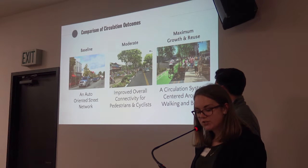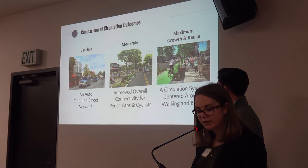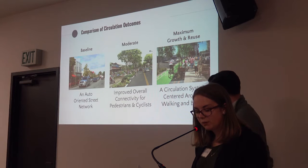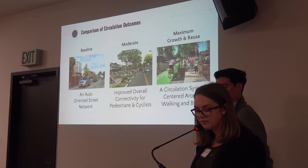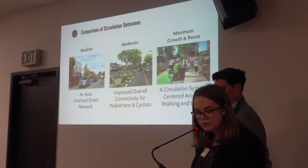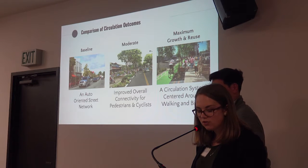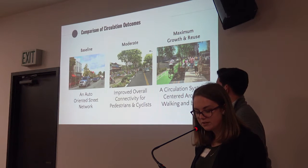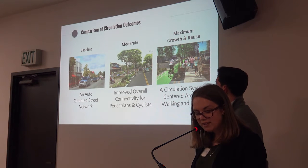Regarding circulation, the baseline growth alternative remains auto-oriented but introduces two potential improvements: a safe pedestrian crossing across Highway 1 and the expansion of sidewalks as vacant land is developed. The moderate growth and redevelopment alternative is centered on walking and biking, including complete streets, traffic calming measures, additional bus stops, and a pedestrian and bicycle trail. The maximum growth and reuse alternative builds upon improvements presented in the moderate scenario.